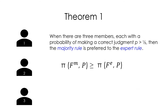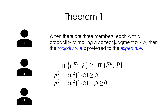Here is a theorem: when there are three committee members, each with a probability P greater than one-half of making a correct judgment, the majority rule is preferred to the expert rule. The probability of the committee making a correct judgment under the majority rule is greater than or equal to the probability under the expert rule. A simple calculation can verify this. We need to prove that the probability under majority rule minus the probability under the expert rule is greater than or equal to zero.